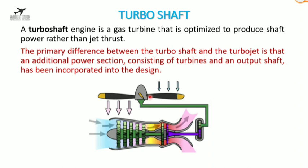Next we have the turboshaft engine. A turboshaft engine is a gas turbine optimized to produce shaft power rather than jet thrust — it has an output shaft here. These turboshaft engines are used in helicopters.